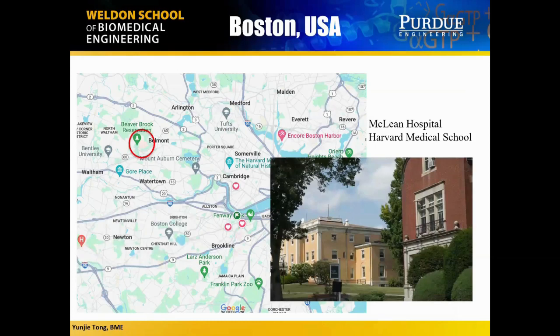This is where McLean Hospital is located. It belongs to the Department of Psychiatry at Harvard Medical School, and it's the best private psychiatric hospital in the United States. I planned to stay there for two years, work with Blaise, and then leave. But it turned out to be many more years — I spent many more years in a psychiatric hospital doing brain research.